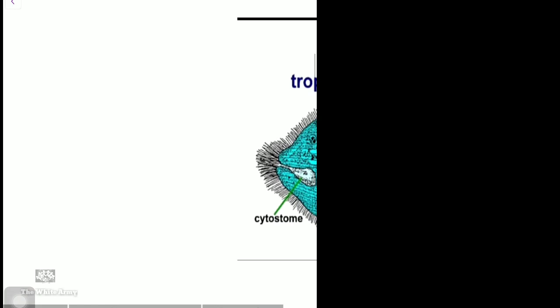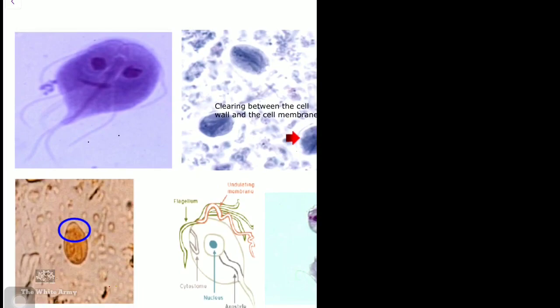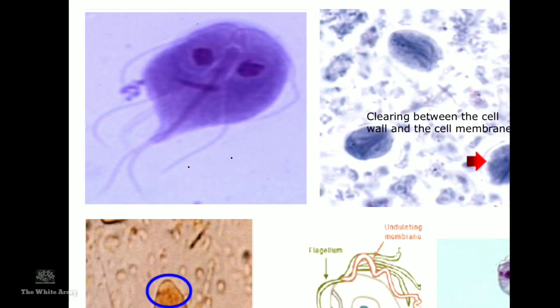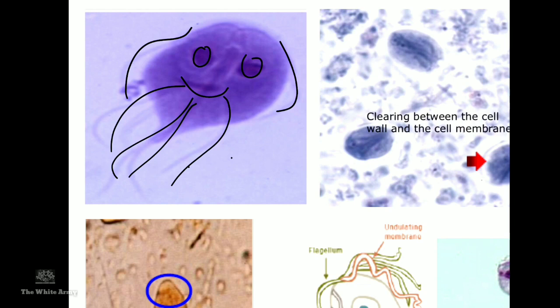Coming to flagellates: the next image shows a smiling protozoa with visible flagella — this is the trophozoite of Giardia lamblia. Giardia is present in the gut. The trophozoite has a characteristic smiling face appearance.